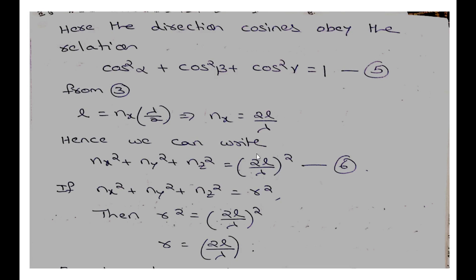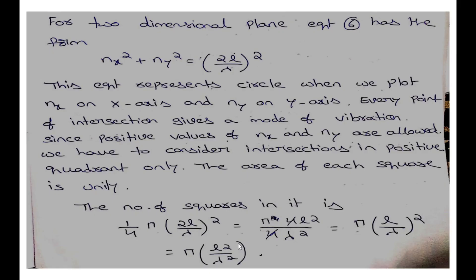So R² = (2L/λ)², and R = 2L/λ is the radius value. In two dimensions, consider Nx² + Ny² = (2L/λ)², which is the equation of a circle: x² + y² = R². This represents a circle when we draw the X-axis and Y-axis and count the number of modes.